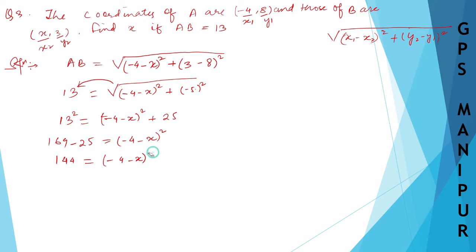Transfer the square to the other side — it becomes a square root, and we also put plus and minus. So root of 144 is 12, giving plus or minus 12 equals (-4 minus x).